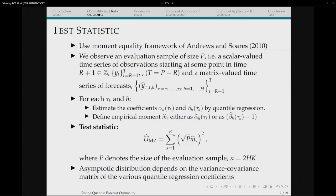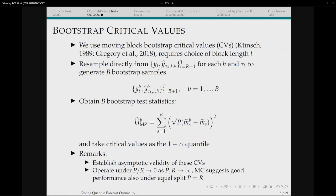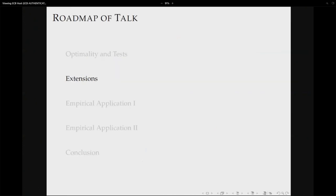The asymptotic distribution depends on the variance-covariance matrix — the dependence between all the estimated coefficients. We do not estimate this matrix directly; instead we use a moving block bootstrap to obtain critical values. We establish the validity of this bootstrap under certain assumptions, in particular that the evaluation sample and estimation sample both go to infinity, but the estimation sample dominates the evaluation sample.